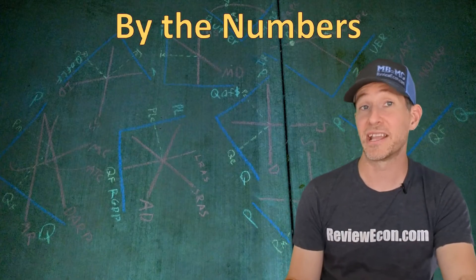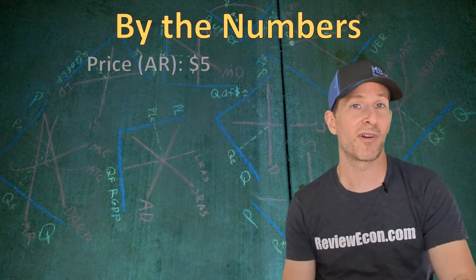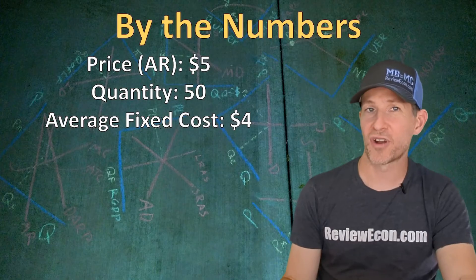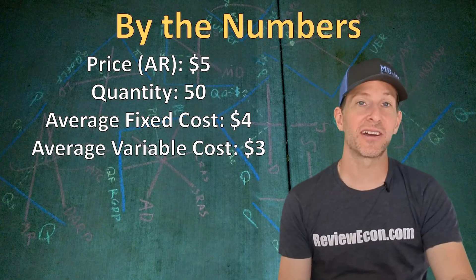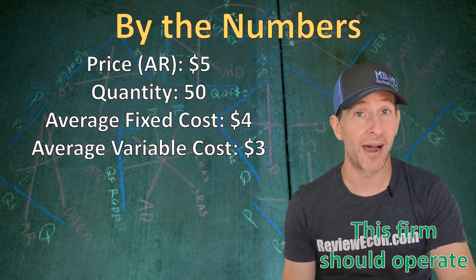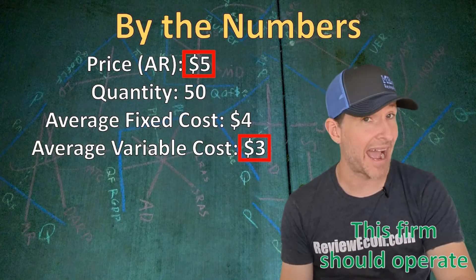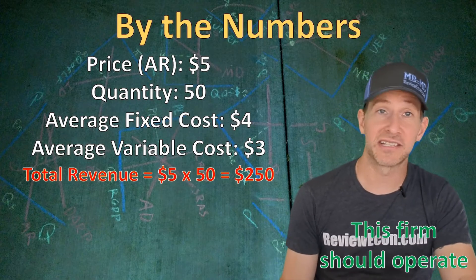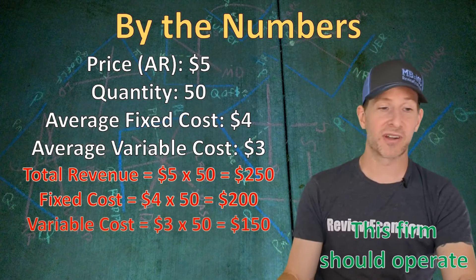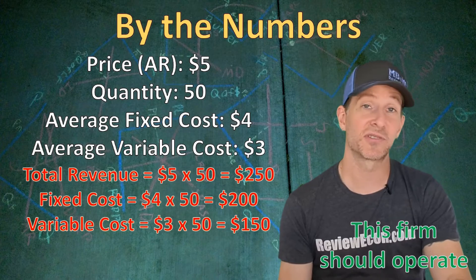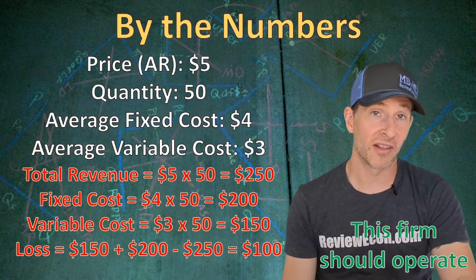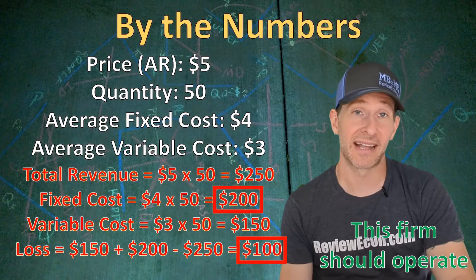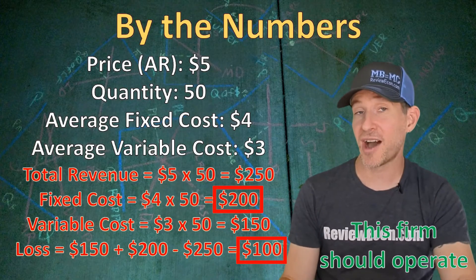Let's look at some numbers to determine if a firm should operate or not in the short run. Say a firm is able to sell their product at a price of $5. If the profit maximizing quantity is 50 units and the average fixed cost is $4 each, while the average variable cost is $3 each, the price or average revenue is greater than the average variable cost, so this firm should operate. Total revenue is $250. Fixed cost is $4 times 50 units, which is $200. Variable cost is $3 times 50 units, which is $150. That means this firm will lose $100 by choosing to operate. Since total revenue is greater than the variable cost, losses are less than the fixed cost, and so the firm should continue to operate despite suffering economic losses.